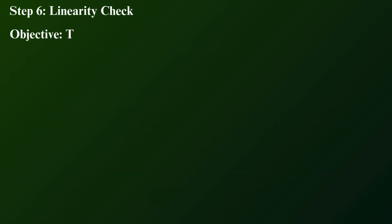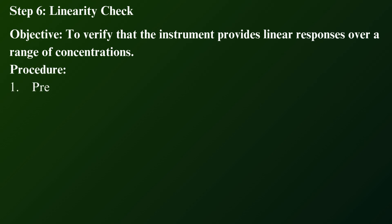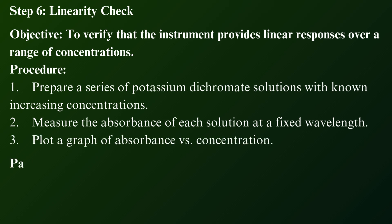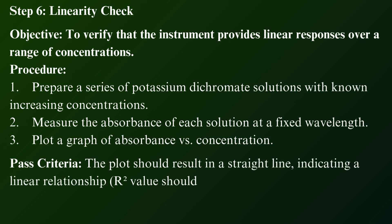Step 6: Linearity check. To verify that the instrument provides linear responses over a range of concentrations. Procedure: Prepare a series of potassium dichromate solutions with known increasing concentrations. Measure the absorbance of each solution at a fixed wavelength. Plot a graph of absorbance versus concentration. Pass criteria: The plot should result in a straight line, indicating a linear relationship.